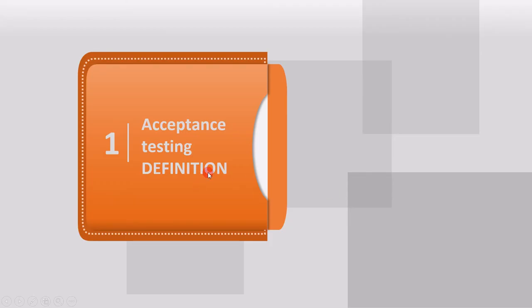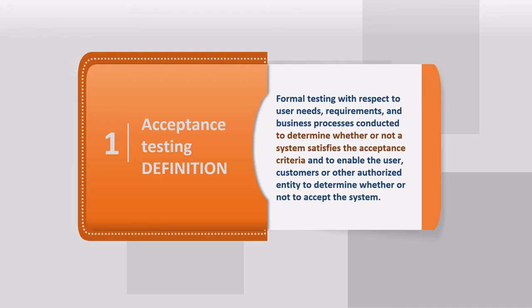Now we will see the definition of acceptance testing. Acceptance testing is performed when the complete system has been implemented. Once the system is ready, we test to see if we can accept its performance. The formal definition is: formal testing with respect to user needs, requirements, and business processes, conducted to determine whether or not a system satisfies the acceptance criteria, and to enable the user, customer, or other authorized entity to determine whether or not to accept the system. There are certain acceptance criteria in place; once the system is ready, we carry out acceptance testing to check if it is fulfilling those criteria.